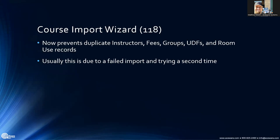Course import wizard: one of the things we've noticed is you go to do an import and for whatever reason — maybe Excel truncates on the year and you're putting in '202' instead of '2023' — SQL Server blows up when you try to do that. The instructor fees, groups, UDFs, and room use records would all get input, but those course records would all be missing. So I added a duplicate checker just for those items to make sure they don't come in again and cause other problems. You can also retry your failed import without any consequences.